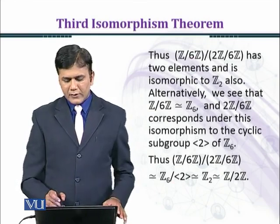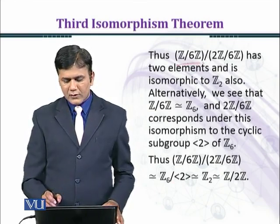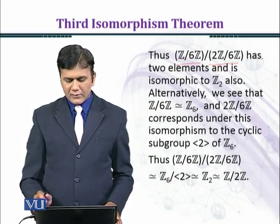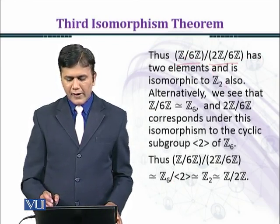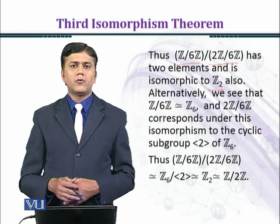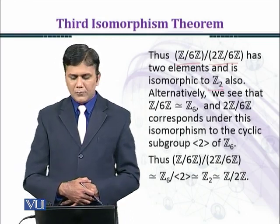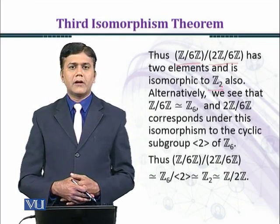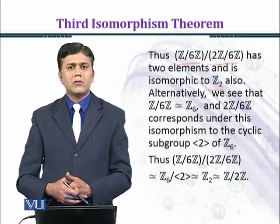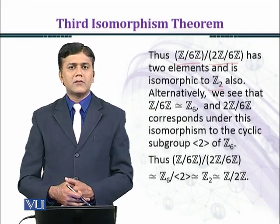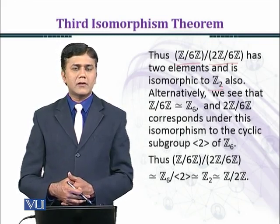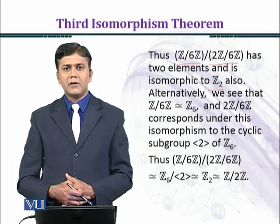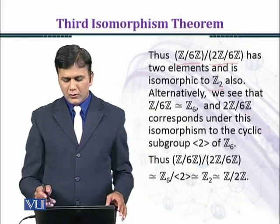Thus Z over 6Z, over 2Z over 6Z, has two elements and is isomorphic to Z₂. When we mod out Z/6Z (which has 6 elements) by 2Z/6Z (which has 3 cosets), this quotient group is isomorphic to Z₂.